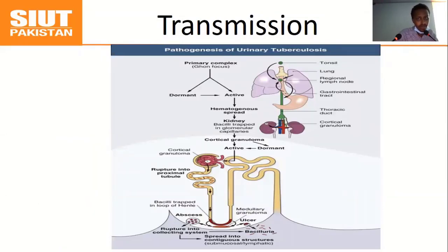Regarding transmission and pathogenesis of urinary tuberculosis: primarily, the lungs are infected and it remains latent before becoming active. It can be transmitted via aerosol from an infected person, then reaches regional lymph nodes and the gastrointestinal tract through the thoracic duct. Spread can occur via hematogenous route, which is the most common, or retrograde — such as in patients receiving BCG — or directly through a fistula between the genitourinary tract and a trophic fistula, which can lead to abscess formation.